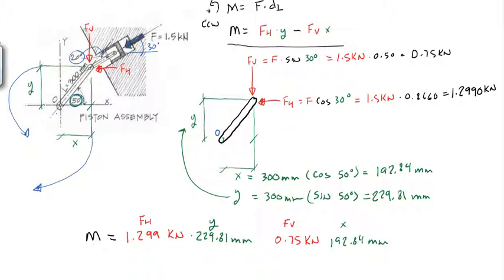Again, we have the horizontal force Fh which is going in a counterclockwise or a positive sense. And Fv which is going in a clockwise sense so that gets a negative. And when we do the math on this, we get 153.9 kilonewton millimeters. And if we convert that to kilonewton meters to compare against the solution in the textbook, we get 0.1539 kilonewton meters.